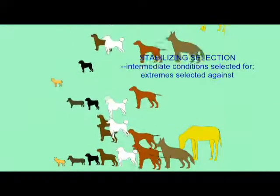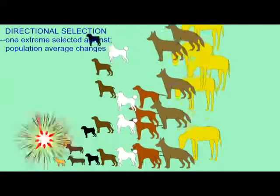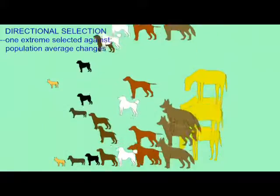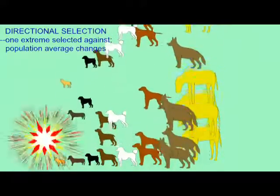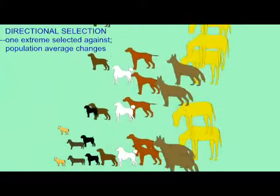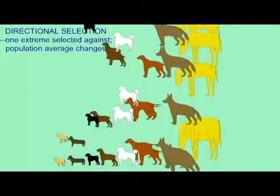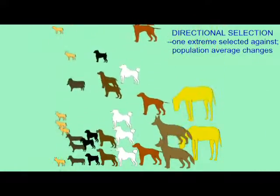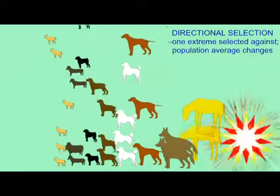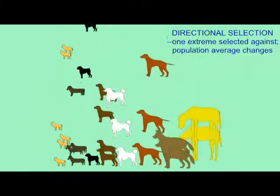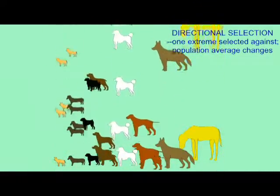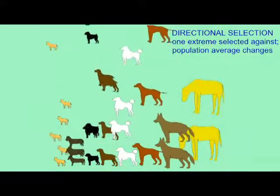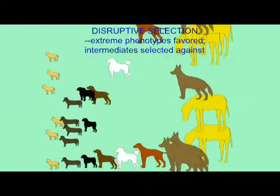In other cases, known as directional selection, one of the extremes is at a disadvantage and is less likely to pass alleles on to the next generation, while the other extreme is favored. So there will be a shift in the mean of the population over time, as more and more individuals at one end of the spectrum survive, while at the other end of the spectrum fewer individuals survive.